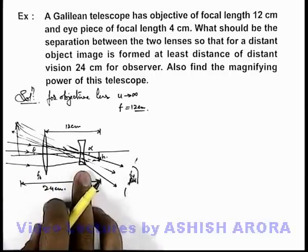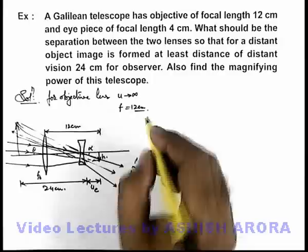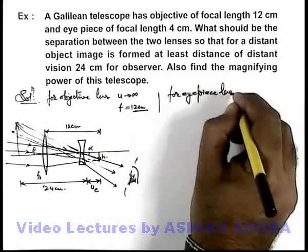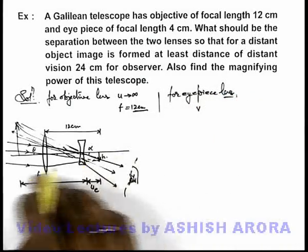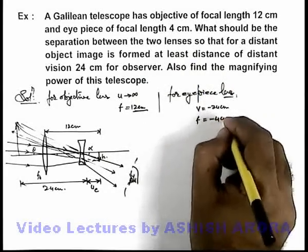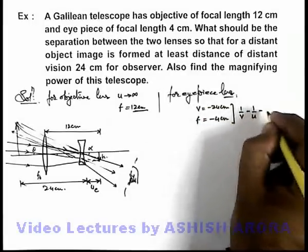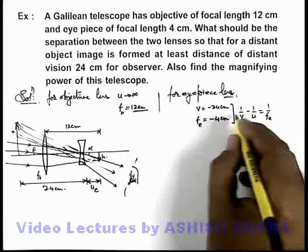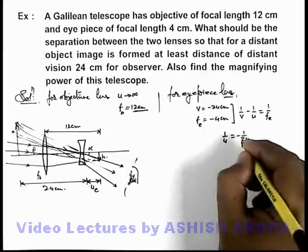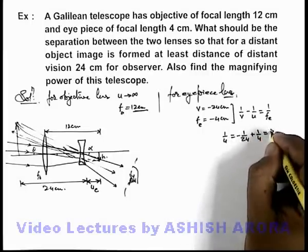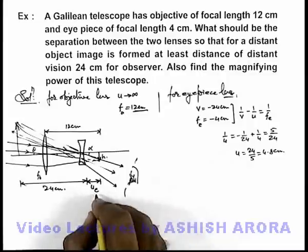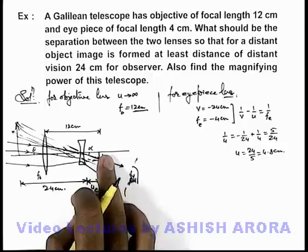The magnifying power of this telescope we can write as alpha by theta. Let's analyze carefully: the first image is produced at 12 centimeter. For the eyepiece lens, the image distance in this situation is minus 24 centimeter, and its focal length is also given as minus 4 centimeter. Substituting these values in the lens formula, 1/v minus 1/u equals 1/f_e, we get 1/u equals minus 1/24 plus 1/4, which gives 5/24, so u equals 24/5, that is 4.8 centimeter. This means u_e is equal to 4.8 centimeter, which is where the intermediate image is obtained. Therefore, the separation between the lenses is l equals 12 minus 4.8, which gives 7.2 centimeter — that is the answer to the first part of the problem.